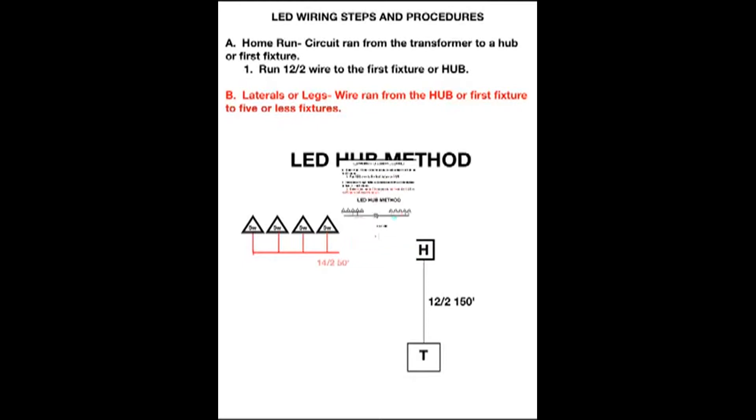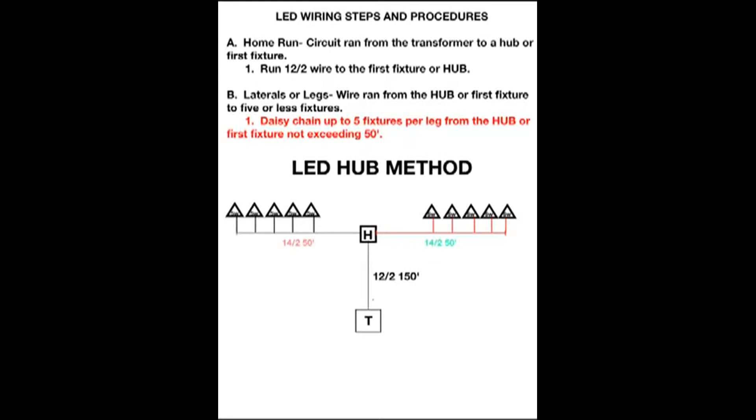You can daisy chain up to five fixtures per leg from the hub or the first fixture, but make sure you don't exceed 50 feet. This is the 5/50 rule.